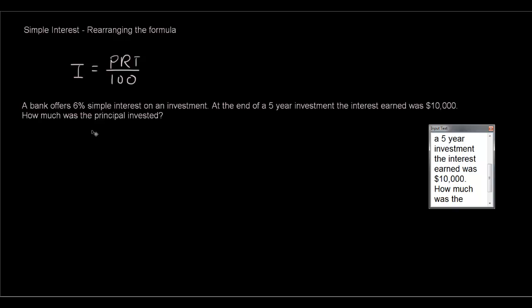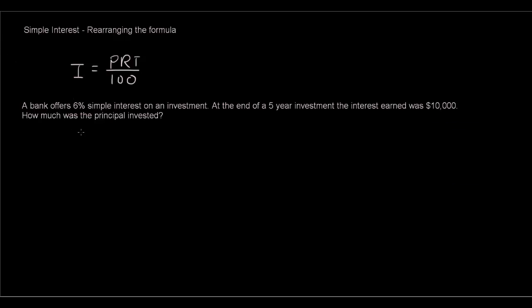So let's analyze the information that we have here. There's four variables that we could get values for. There's P which is the principle, there's R which is the rate per year, and there's the T which is the time in years, and there's the I which is the amount of interest.